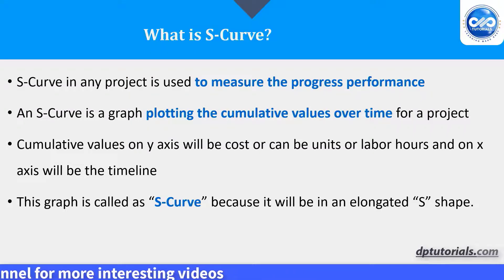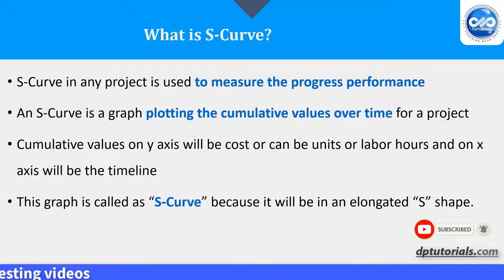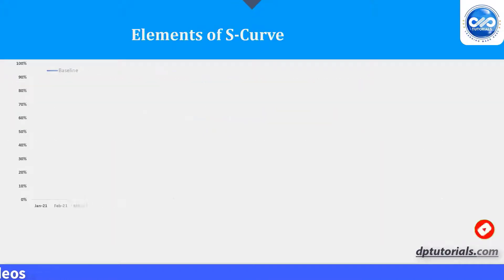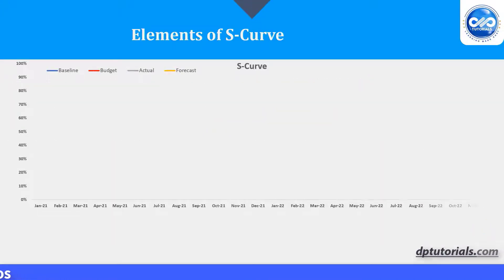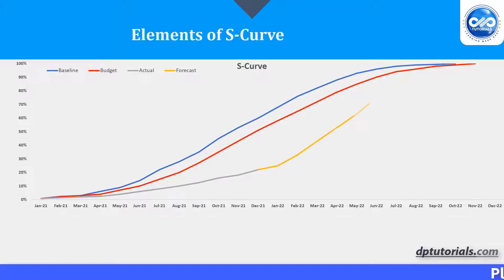You may be wondering why we call it an S-curve. The S-curve often forms its shape because the growth of the project in the beginning stages is usually slow, forming an elongated S-shape as the project progresses.